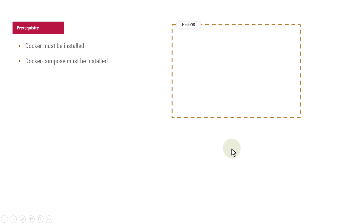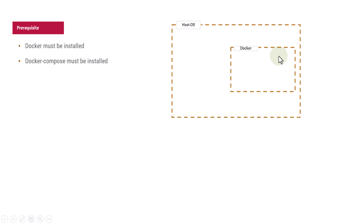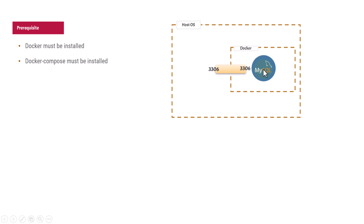Your host operating system — whether Windows, Ubuntu, or Mac OS — will have a Docker environment running inside it. Inside that Docker environment, we are going to create a MySQL container and expose port 3306. Port 3306, the default MySQL port, will be exposed on the host operating system and also on port 3306 inside the Docker container.